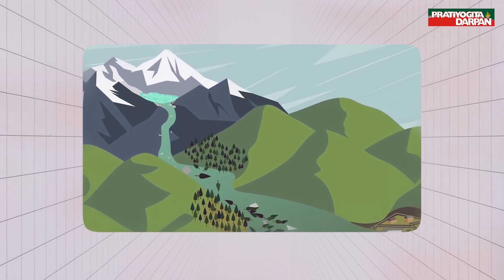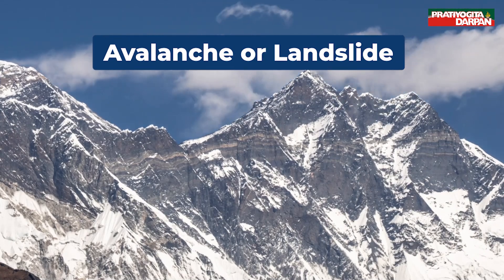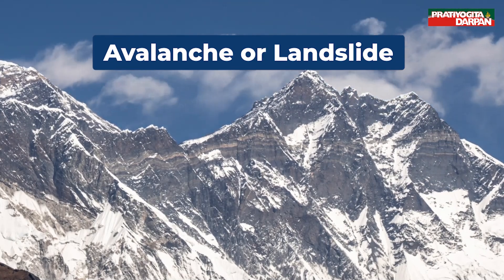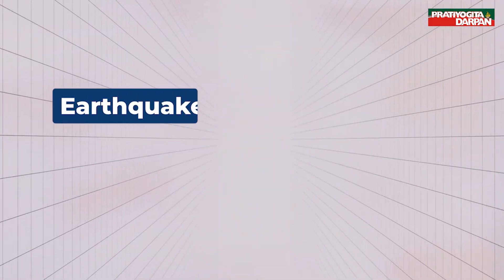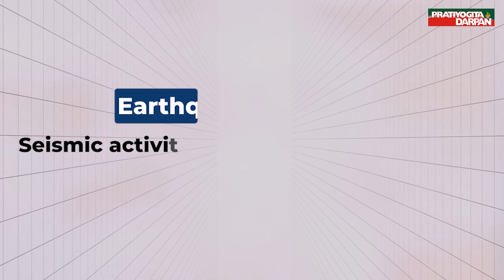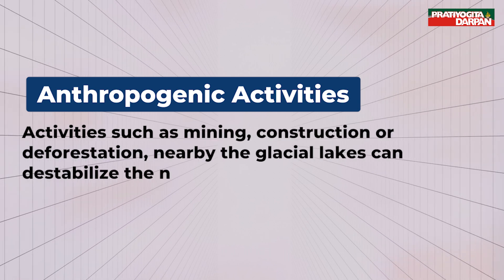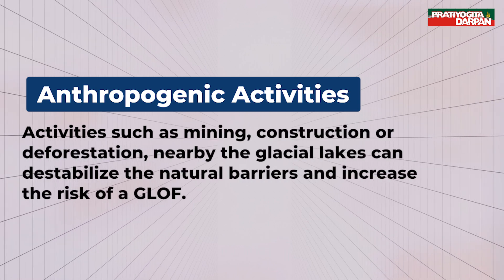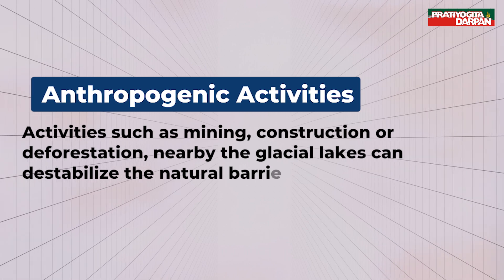Avalanches or landslides can disturb the damming, causing its weakening or collapse. Seismic activity can trigger a GLOF by weakening or collapsing the damming. Anthropogenic activities such as mining, construction or deforestation nearby glacial lakes can destabilize the natural barriers and increase the risk of a GLOF.